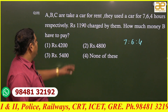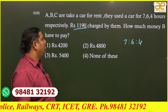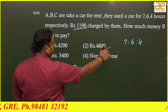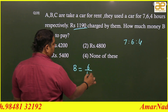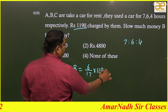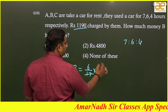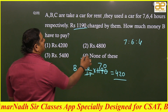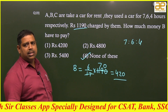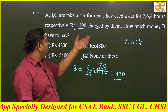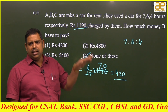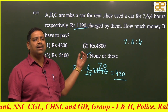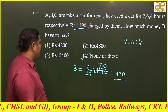The ratio is 7 : 6 : 4. Total rent is 1190. He is asking about the share of B. B's share = 6 out of (7+6+4 = 17) into 1190. But actually, no need to solve this question — because the total rent is 1190, B's share must be less than that. All the given answer options are more than 1190, which is impossible. So the answer is directly 'none of these.'